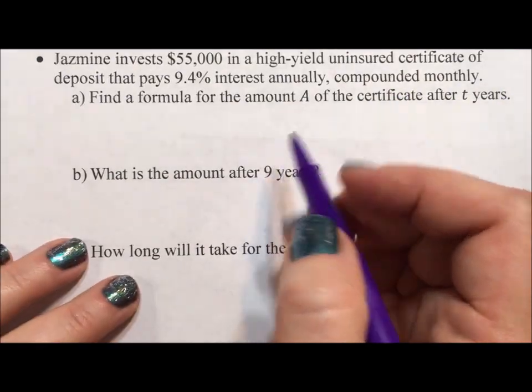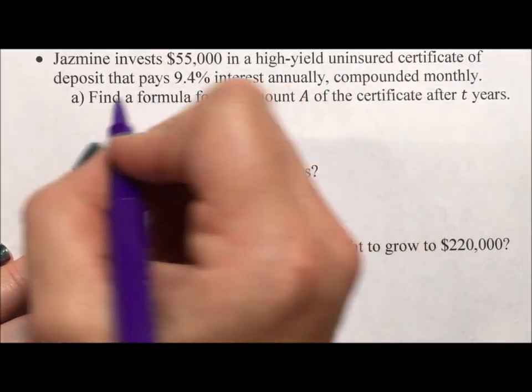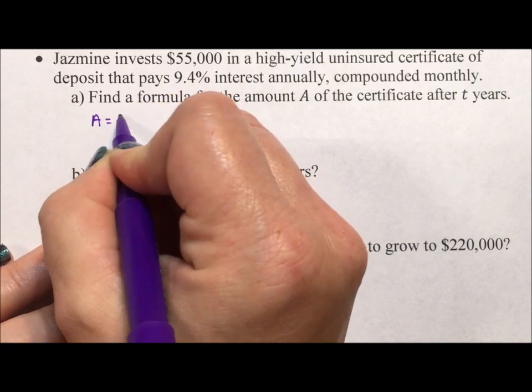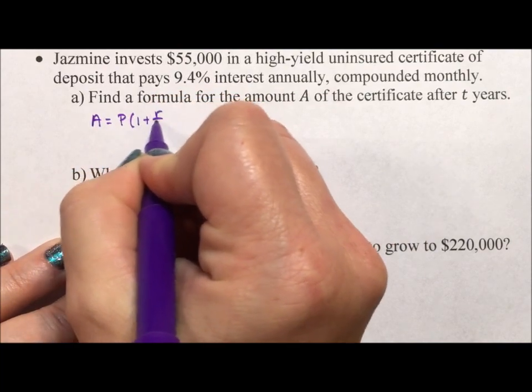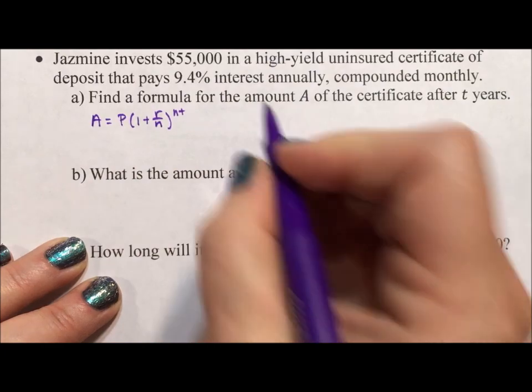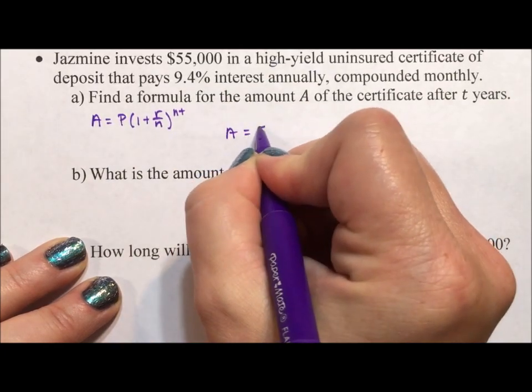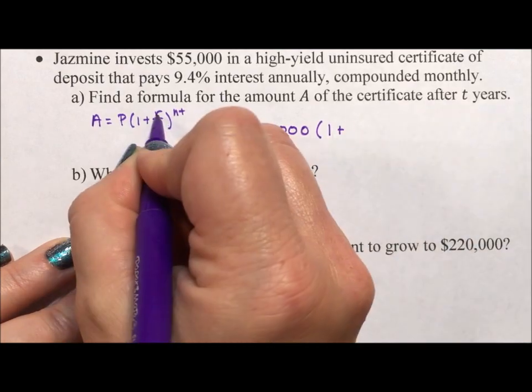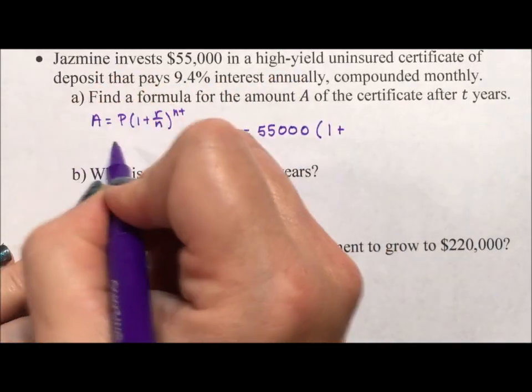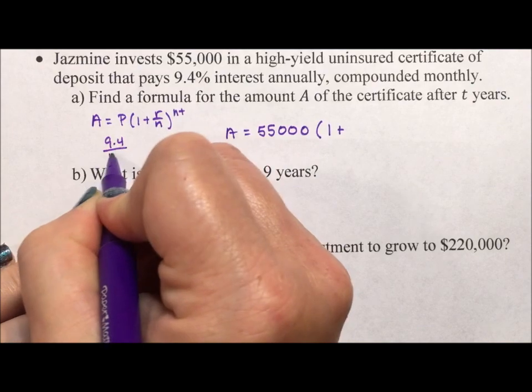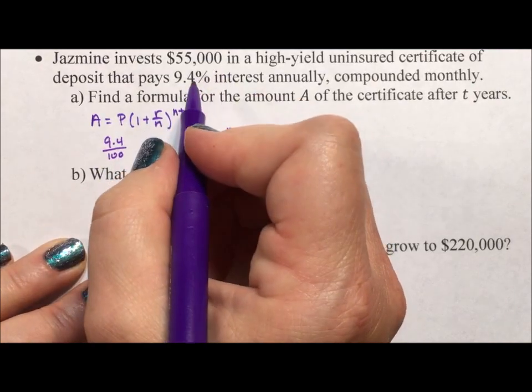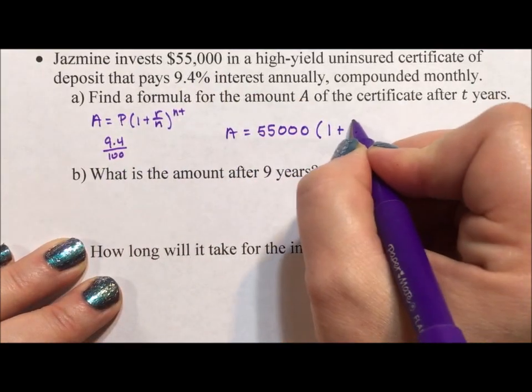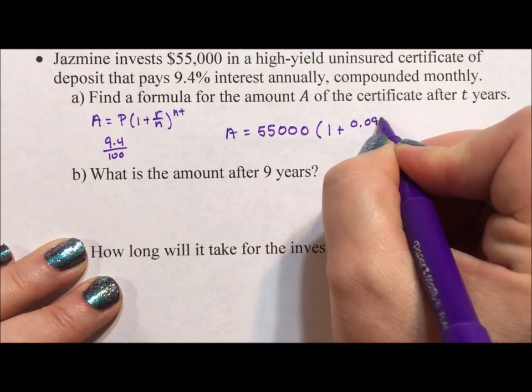Alright, find the formula. So our compound interest formula: A = P(1 + R/N)^(NT). P is the principal, your initial amount invested, which is $55,000. 1 plus R is your rate as a decimal, so 9.4% divided by 100, because percent means per 100, is 0.094.